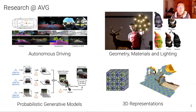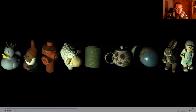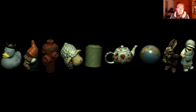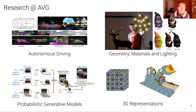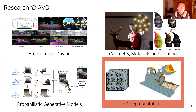We're also working on fundamentals of geometry and material and lighting estimation. Here's an example where you can see how the reconstructions look like after estimating both geometry and materials. A particular focus of our group is on probabilistic generative models, because we believe that building good simulations of the world is important. And then, of course, we work on fundamental 3D representations — that is the topic for today.